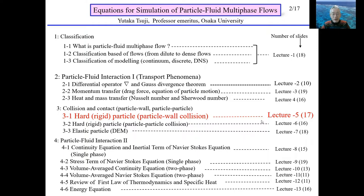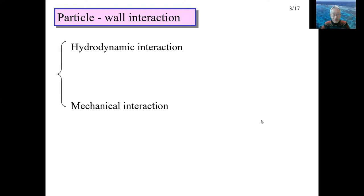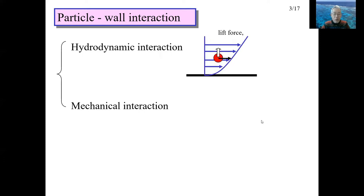Let's begin with particle-to-wall collision using the hard-sphere model. There are two kinds of particle-to-wall interactions: hydrodynamic interaction and solid-mechanical interaction. When a particle near the wall moves in the fluid parallel to the wall, the lift force acts on the particle in addition to the drag force, because the velocity gradient of fluid becomes large near the wall. This is hydrodynamic interaction.